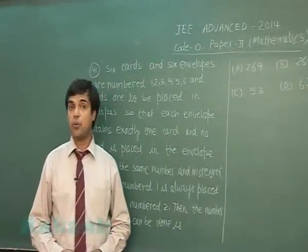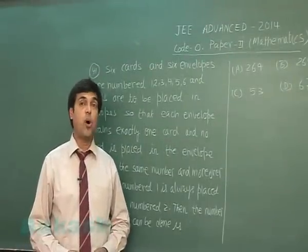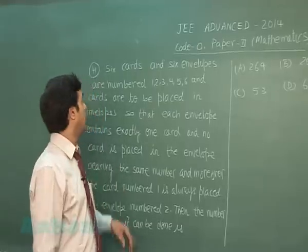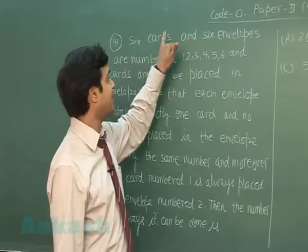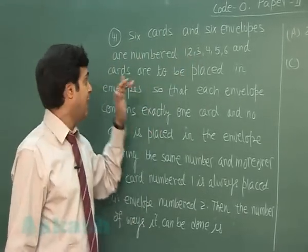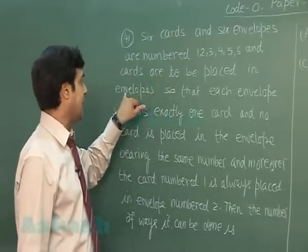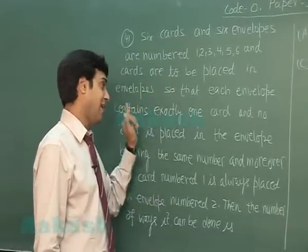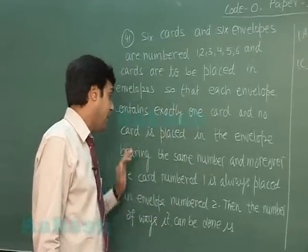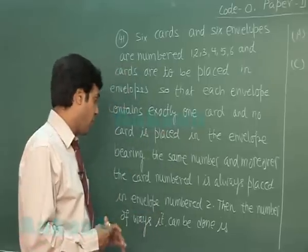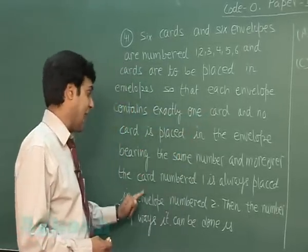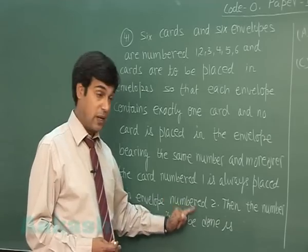Hello students, now we are going to solve Paper 2 of JEE Advanced 2014 Mathematics, Paper Code 0, Question Number 41. Six cards and six envelopes are numbered 1, 2, 3, 4, 5, 6. Cards are to be placed in envelopes so that each envelope contains exactly one card and no card is placed in the envelope bearing the same number. Moreover, the card numbered 1 is always placed in envelope numbered 2. Then the number of ways it can be done is...